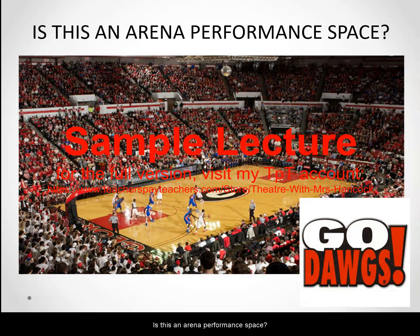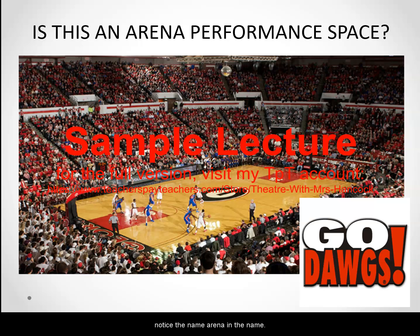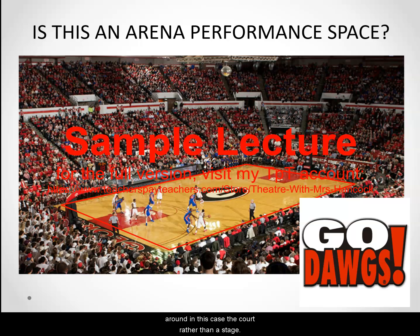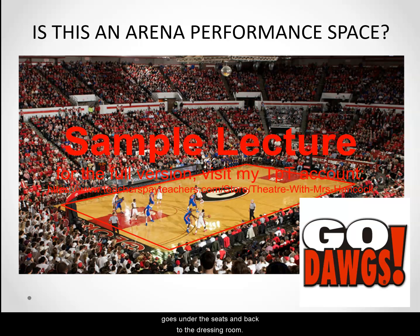Is this an arena performance space? This is the University of Georgia basketball arena — notice the name arena in the name. This is an arena style space with seating all the way around, in this case the court rather than a stage. The actors, or in this case players, would enter through a vomitorium — a hallway that goes under the seats and back to the dressing rooms.